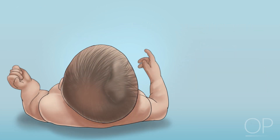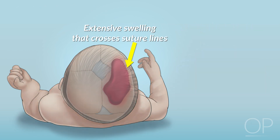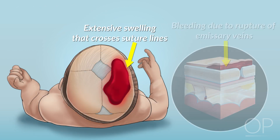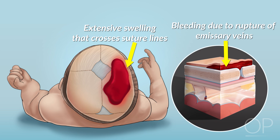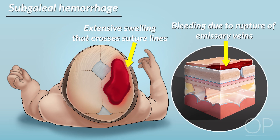Rarely, you may see more extensive swelling that crosses suture lines due to the rupture of emissary veins. This is called a subgaleal hemorrhage and can lead to more serious complications due to significant blood loss in a large potential space.